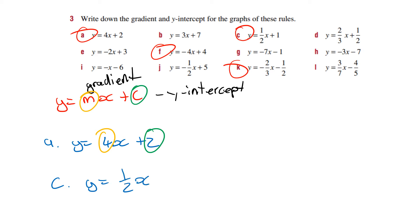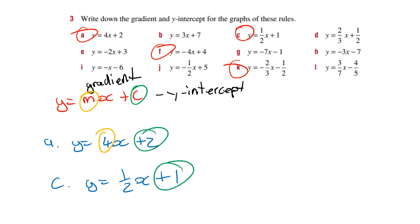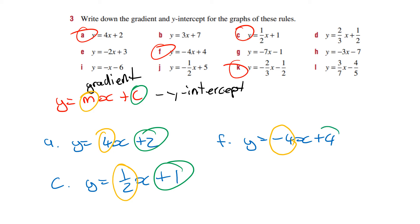For C: y equals half x plus 1. The green is the y-intercept, so I'll circle that — the y-intercept is 1, and the gradient is one half. For F: y equals minus 4x plus 4. The gradient is minus 4 because it's in the position next to the x, and the y-intercept is plus 4.